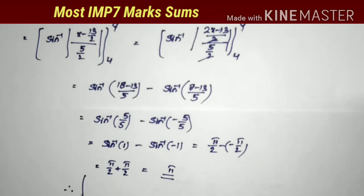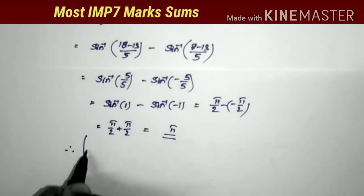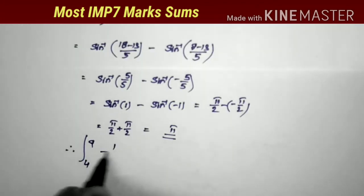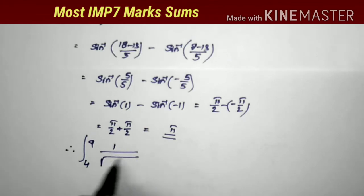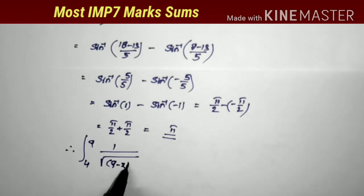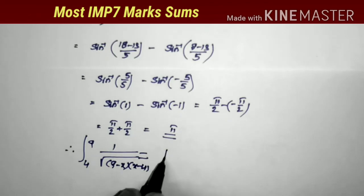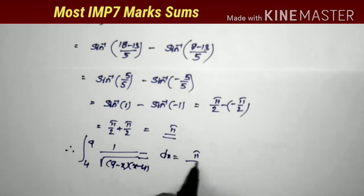Therefore, the answer is: integral from 4 to 9 of 1 by square root of (9 minus x)(x minus 4) dx equals π. That's all.